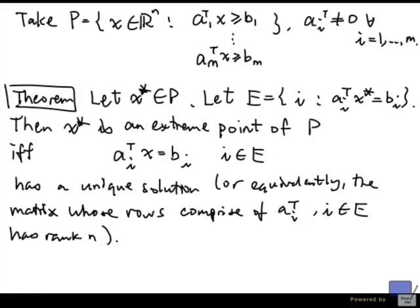So we're going to use this theorem that we have just stated. The first thing to do is identify all the inequalities that are satisfied with equality at x star and look at the system corresponding to those inequalities.